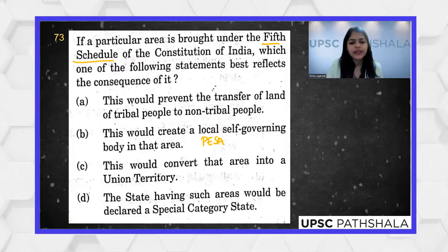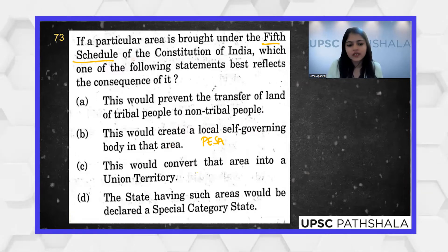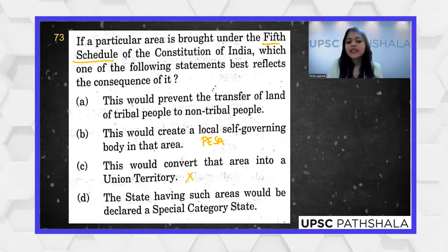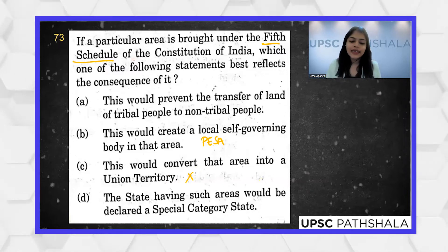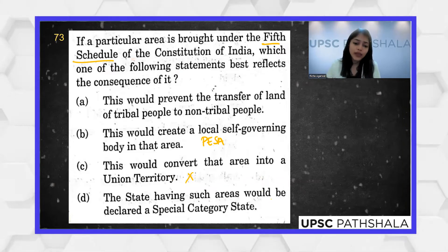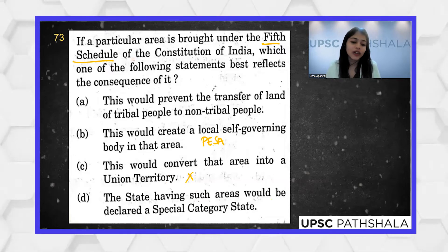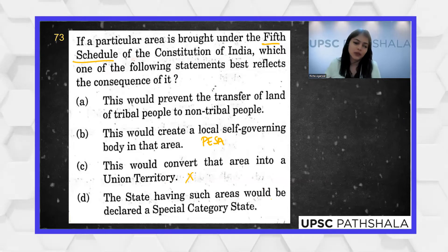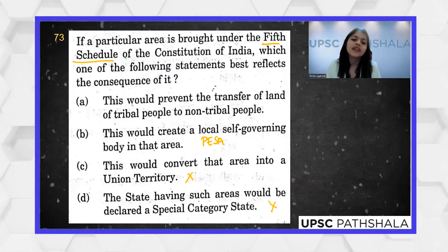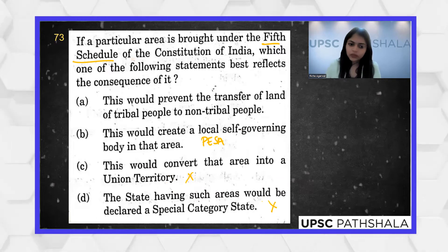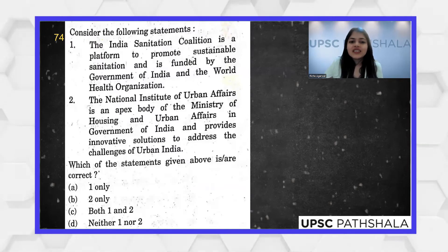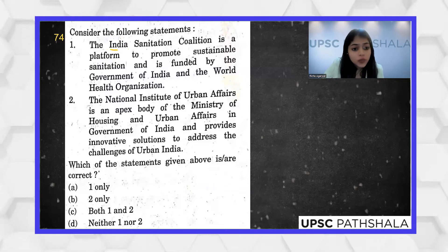Option C — converting that area into a Union Territory — looks very incorrect, as Delhi and Chandigarh are Union Territories with no Fifth Schedule areas. Option D — declaring the state a special category state — also seems very incorrect, as special category status typically applies to mountainous states with difficult terrain and development challenges. The correct answer is A.